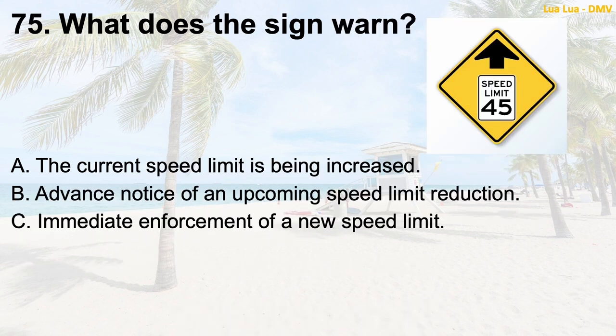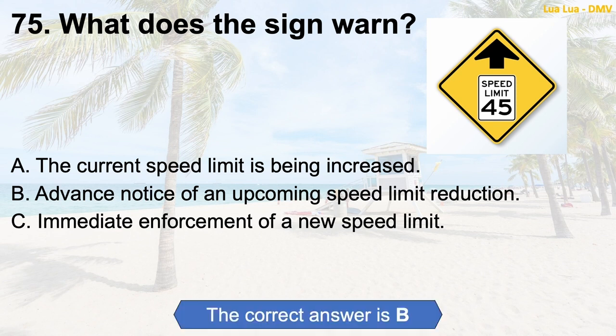Question 75: What does the sign warn? A. The current speed limit is being increased. B. Advance notice of an upcoming speed limit reduction. C. Immediate enforcement of a new speed limit. The correct answer is B: Advance notice of an upcoming speed limit reduction.